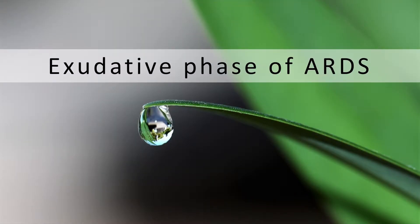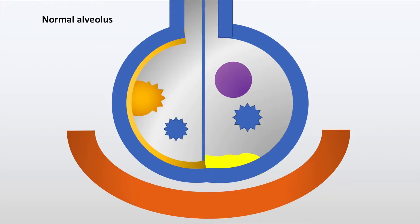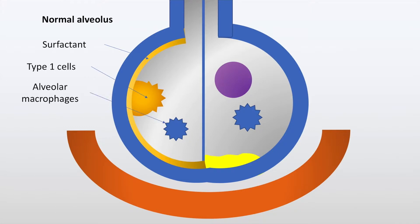The exudative phase of Acute Respiratory Distress Syndrome may be understood with this schematic diagram. On your left is the normal alveolus. This is the surfactant, this is the type 1 pneumocyte, here are the alveolar macrophages, this is the interstitium, and this is the blood vessel.